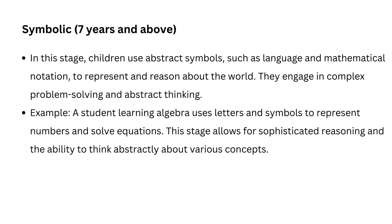The symbolic stage applies to children aged 7 years and above. This is the most advanced stage, where children use abstract symbols such as language, numbers, and other symbol systems to represent and reason about the world. This is where more complex cognitive activities take place, including advanced problem solving, logical reasoning, and abstract thinking. For example, in mathematics, a child learns to use letters and symbols to solve algebraic equations, such as understanding that x + 3 = 5 means x equals 2 — understanding that x is a symbol representing an unknown value.